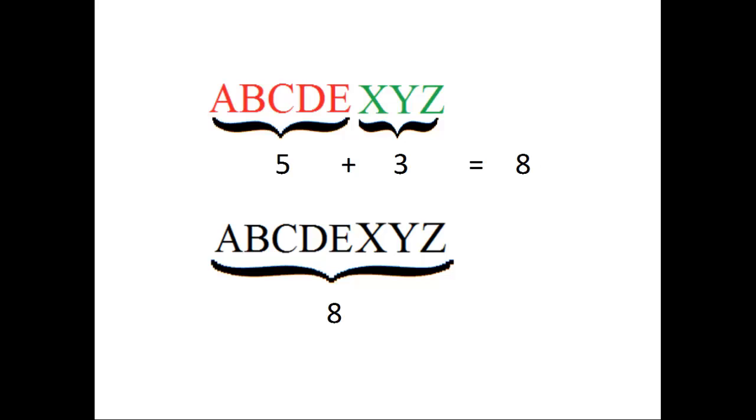Thus, there are eight ways to choose a letter from either of the top two groups. That is the idea behind the rule of sum.